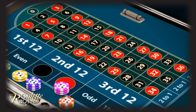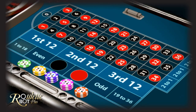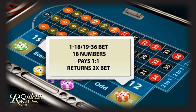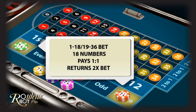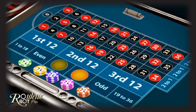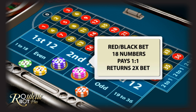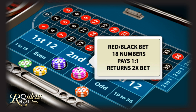Betting options on the outside are: bet on 1 to 18 or 19 to 36 — a bet on the first low 18 numbers or the latter high 18 numbers, giving chances of winning of 1 to 1. Bet on the red or the black — betting on all red numbers or all black numbers, also with chances of winning of 1 to 1.